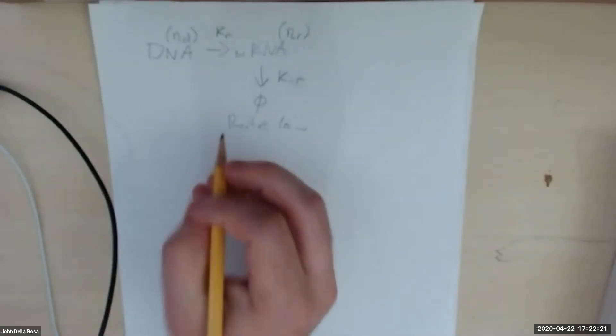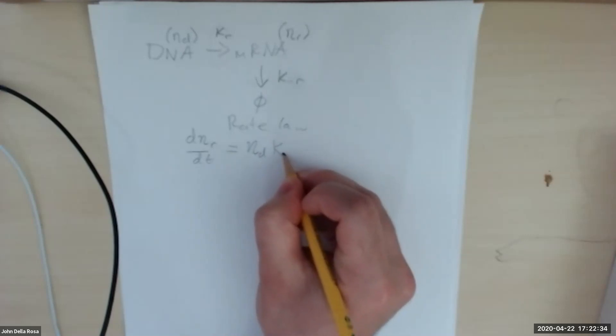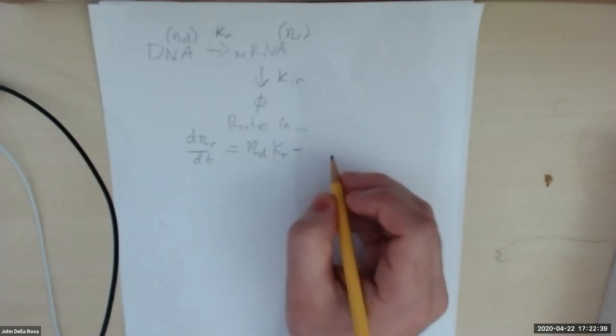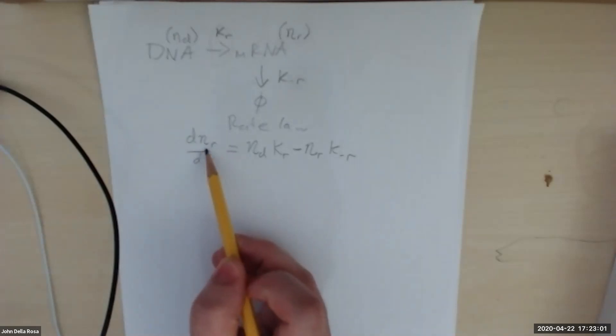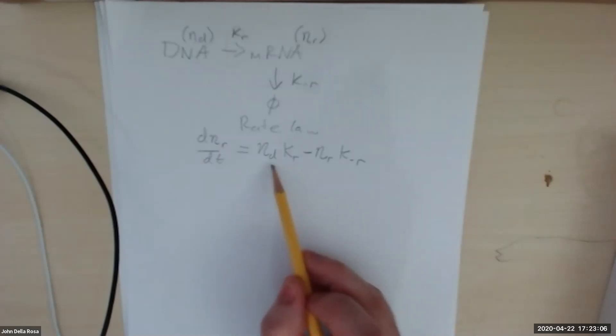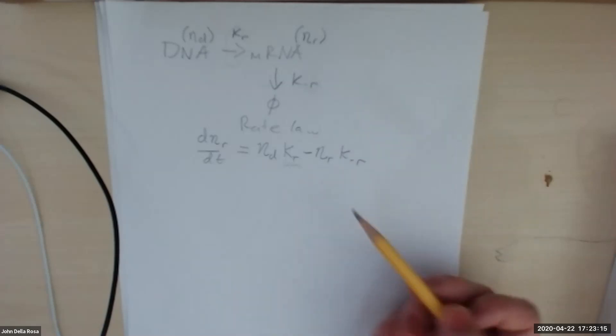The change in mRNA N_r with respect to time equals the amount of DNA times the rate of mRNA production per unit DNA, minus N_r times the rate of degradation. This is similar to how we write normal rate laws — a concentration, rate constant for production, minus a rate constant times concentration for the outflow.